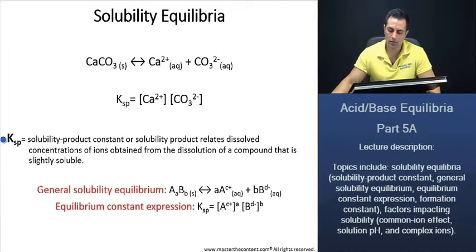Well, let's take a look. The solubility product constant, or solubility product, relates dissolved concentrations of ions, so the carbonate here and the calcium, obtained from the dissolution of a compound that is slightly soluble. So here's our compound that is slightly soluble.